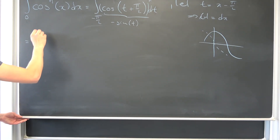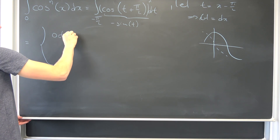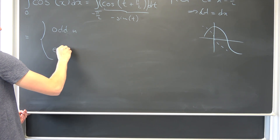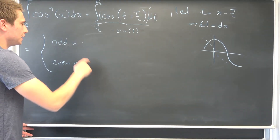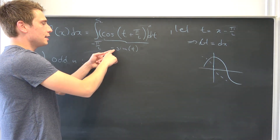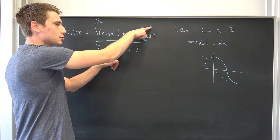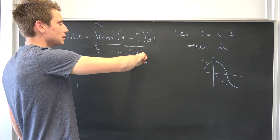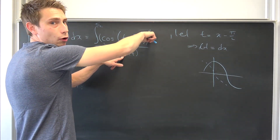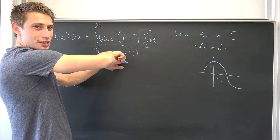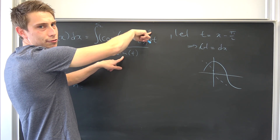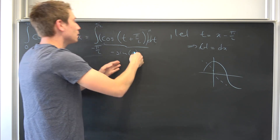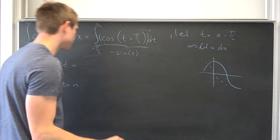Now we have two cases. If our n is actually odd, then we have negative this symmetric integral of sine to the nth power of t. Plugging negative t in: since our power is odd, we are going to get negative the sine to the nth power. This is an odd integrand over a symmetric integral, which — as I made a proof on — leaves us with zero.